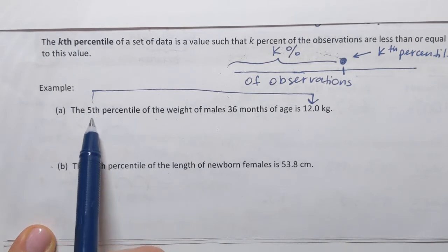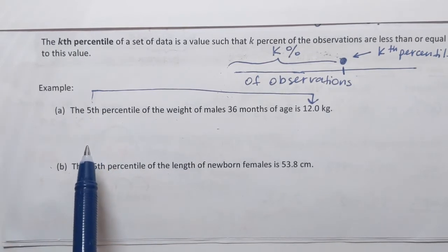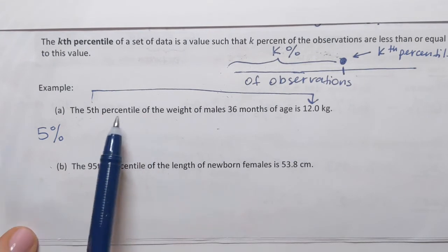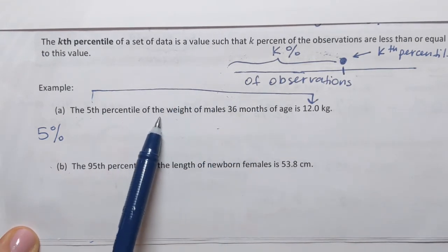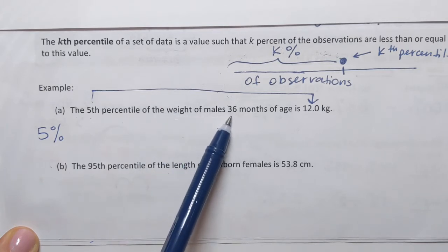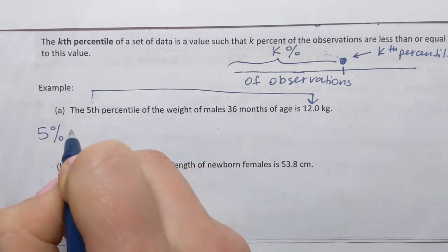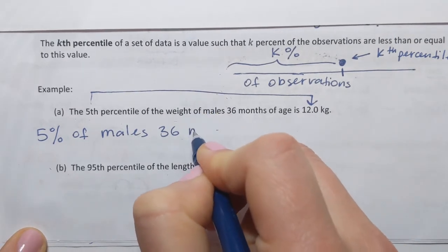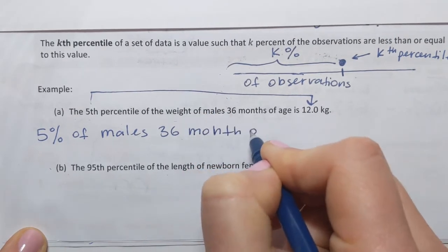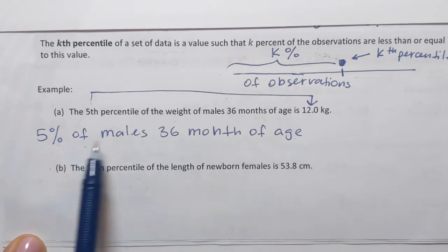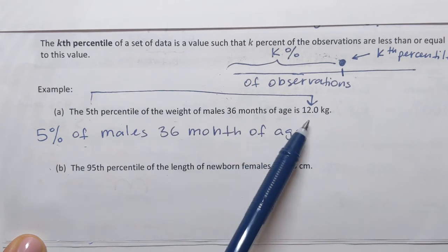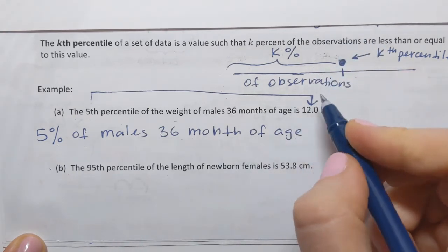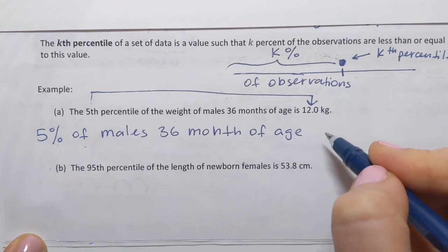It means that first I have to take this percentile, this number, and rephrase it as percentage. So I'm gonna say 5%. 5% of what? Well 5% of that sample or population, it's not specified here but it's described as males 36 months of age. So we're gonna say 5% of males 36 months of age. So what about those 5%? Well 5% of them weigh less than or equal to 12 kilos, or I can say weigh 12 kilos or less.